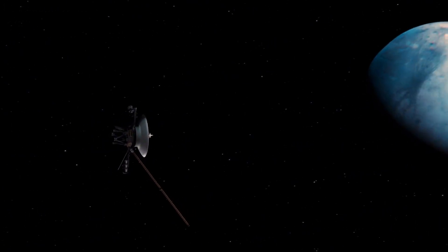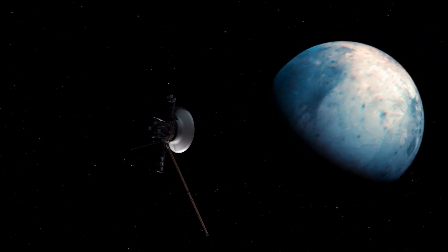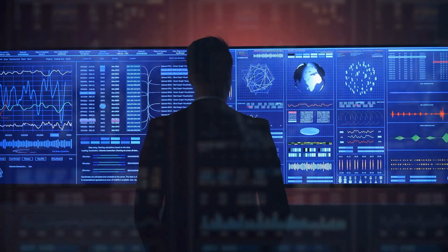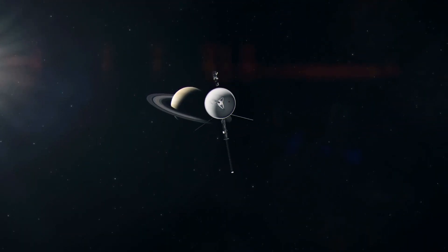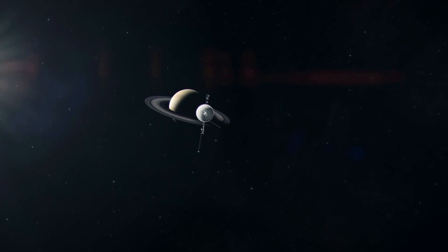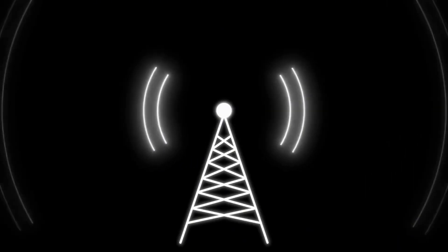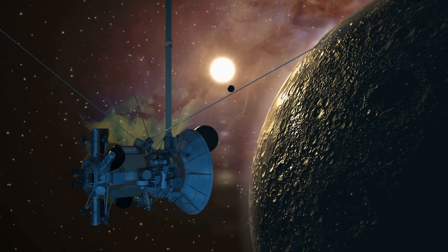The most distant human-made object in the universe, NASA's Voyager 1, is still sending us valuable data after over 45 years in space. For months, it transmitted puzzling gibberish. But now, it's back on track.